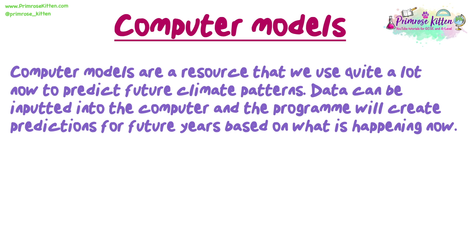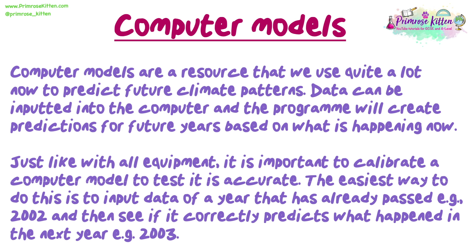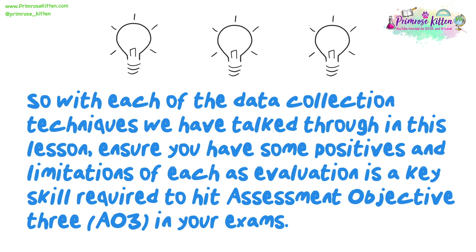Computer models are a resource that we use quite a lot now to predict future climate patterns. Data can be inputted into the computer and the programme will create predictions for future years based on what is happening now. Just like with all equipment, it is important to calibrate a computer model to test it is accurate. The easiest way to do this is to input data of a year that has already passed — for example 2002 — and then see if it correctly predicts what happens the next year, in 2003. So with each of the data collection techniques we have talked through in this lesson, ensure you have some positives and limitations of each, as evaluation is a key skill required to hit AO3 in your exams.